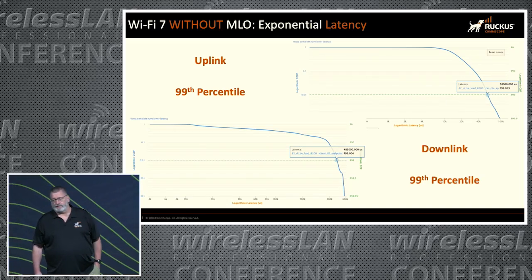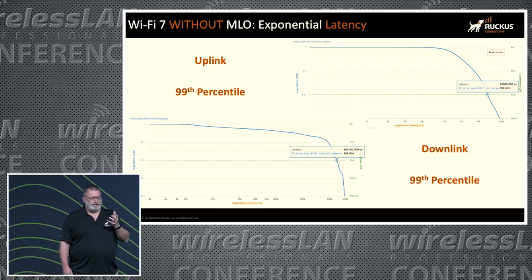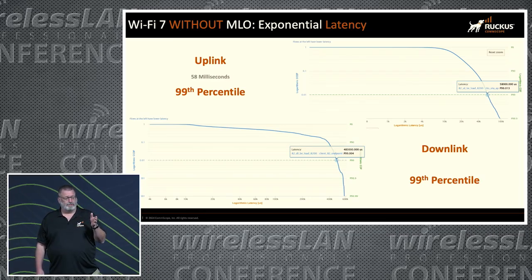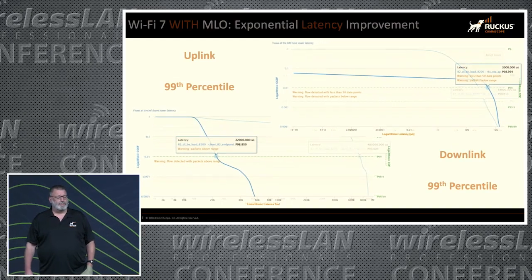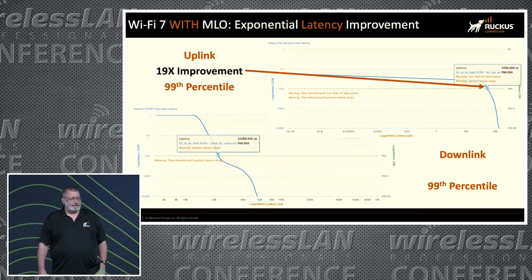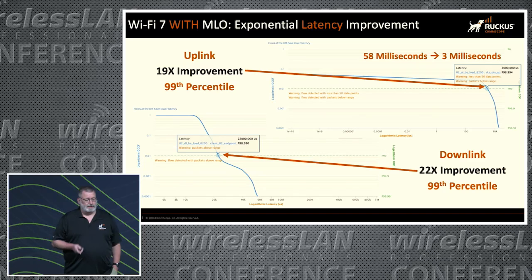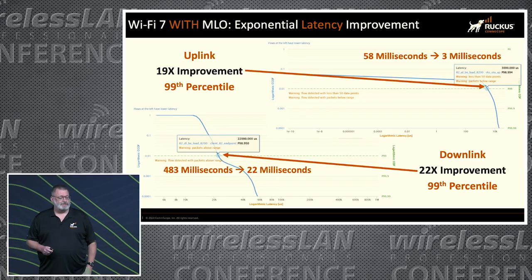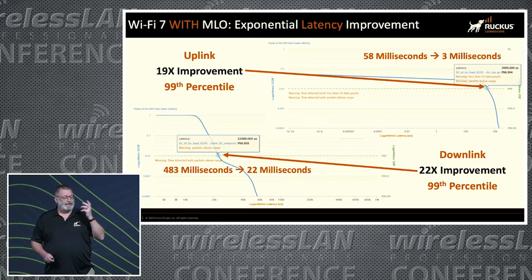Latency — this is a big one. When we look at these graphs, we're measuring at the 99th percentile, so 99% of all the data we collected falls into what I'm about to show you. Without MLO, the latency is 58 milliseconds on the uplink and 483 milliseconds on the downlink at the 99th percentile. When we turn MLO on, on the uplink we get a 19 times improvement — we went from 58 milliseconds to 3 milliseconds of latency. On the downlink, a 22 times improvement — we went from 483 milliseconds to 22 milliseconds of latency by turning MLO on, allowing those client devices to switch back and forth when there's interference.